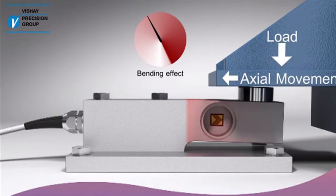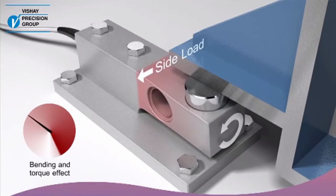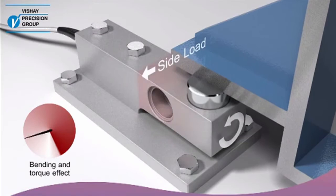The side loads can be in any direction, caused by agitation, wind loads, or the flexing of structural supports and piping connections. In addition to bending errors, the load cell is now subject to twisting forces, which result in additional torque errors.